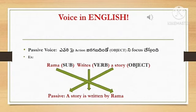Let me repeat with an example. The active sentence is: Rama writes a story. Here Rama is subject and writes is verb, and a story is object. In passive voice, the subject is replaced by the object. So here Rama moves to the end, and the passive sentence becomes: A story is written by Rama.